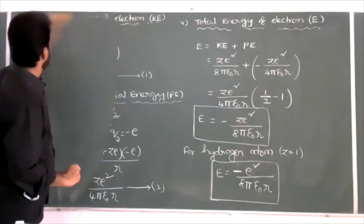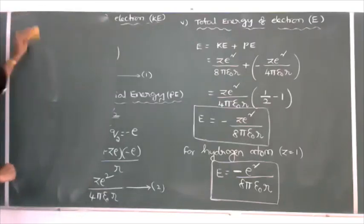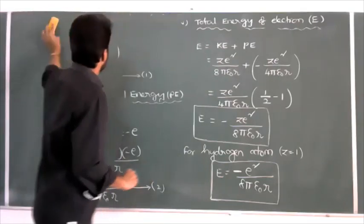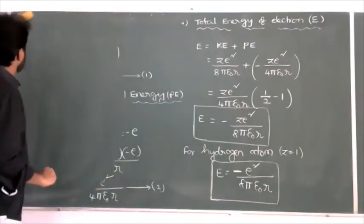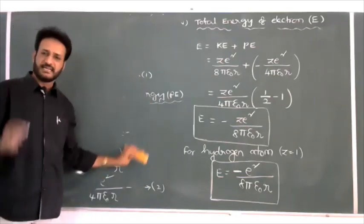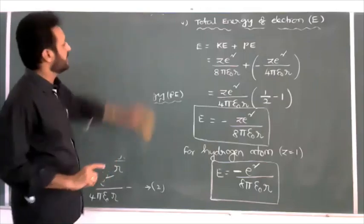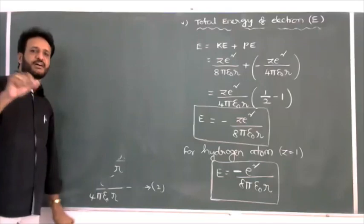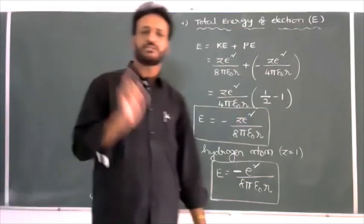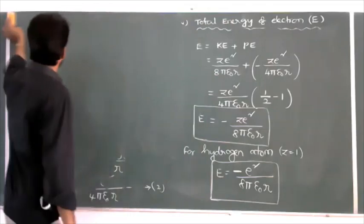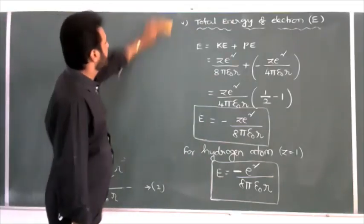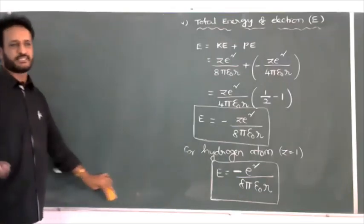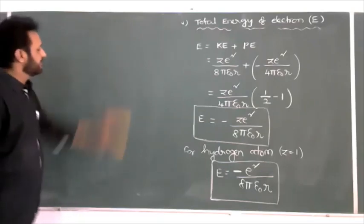With this, the Rutherford model concept is completed. The major drawbacks of the Rutherford model are: first, it is unable to explain the stability of the atom. Second, how electrons are fixed in various orbits or how electrons are arranged in the atom is not explained. Third, the nature of the spectral lines or spectrum produced by hydrogen and other atoms is not explained by the Rutherford model.